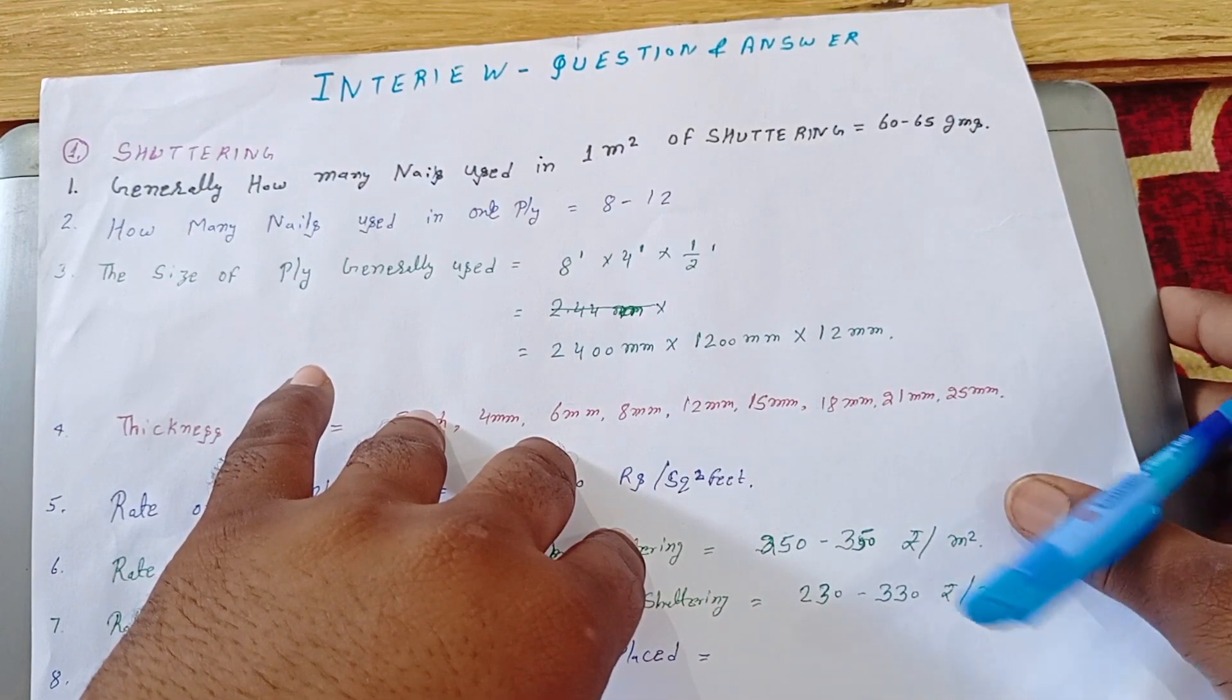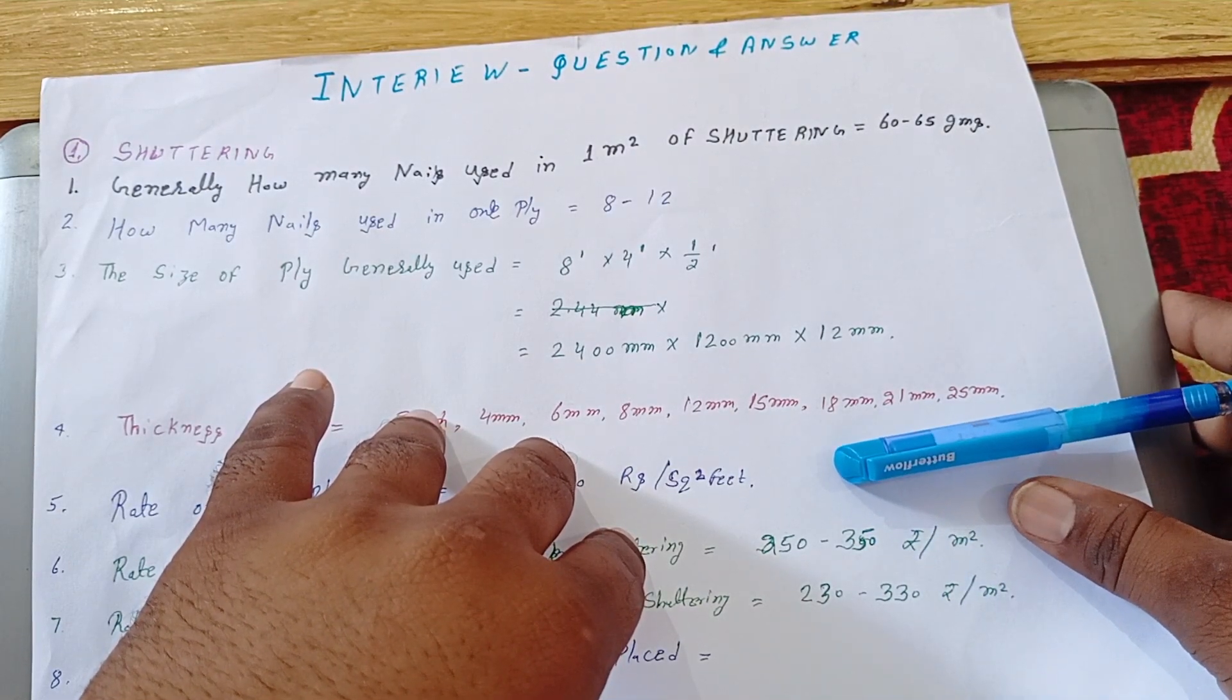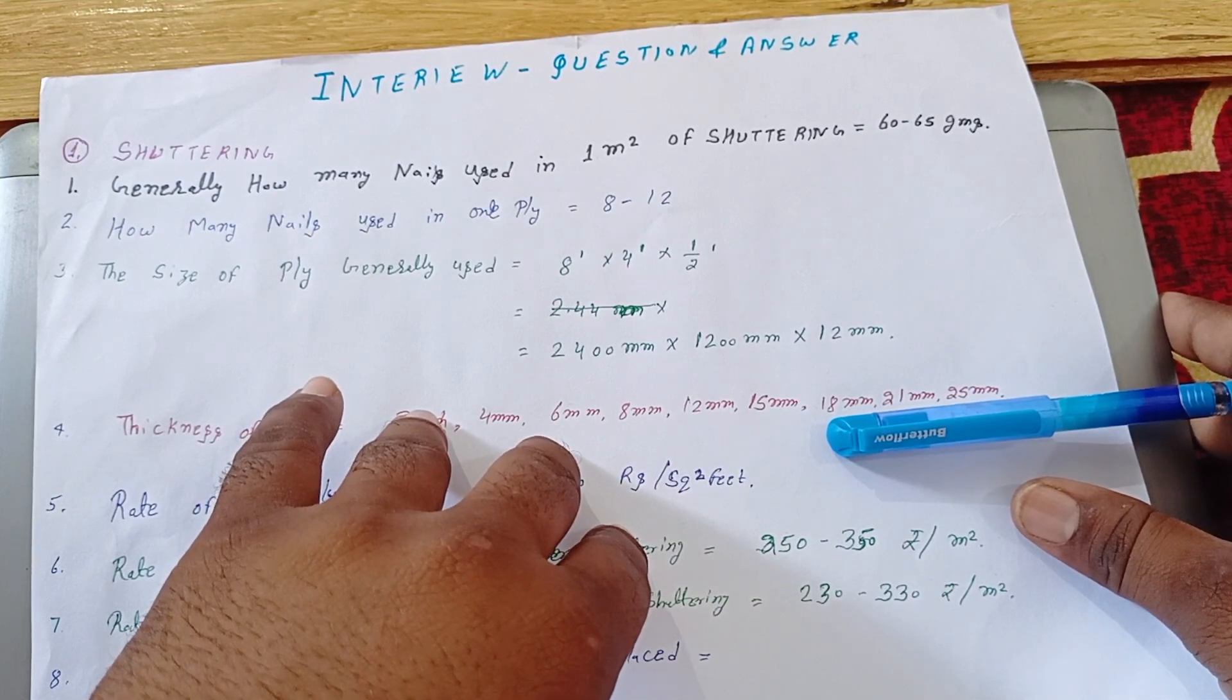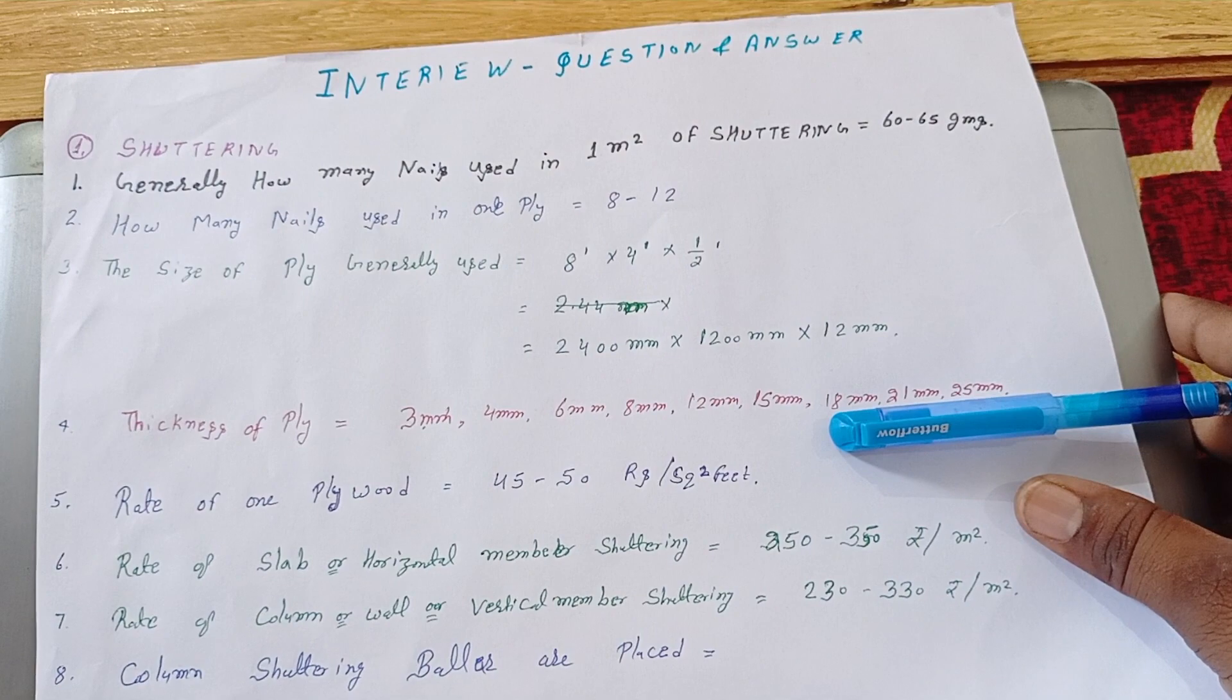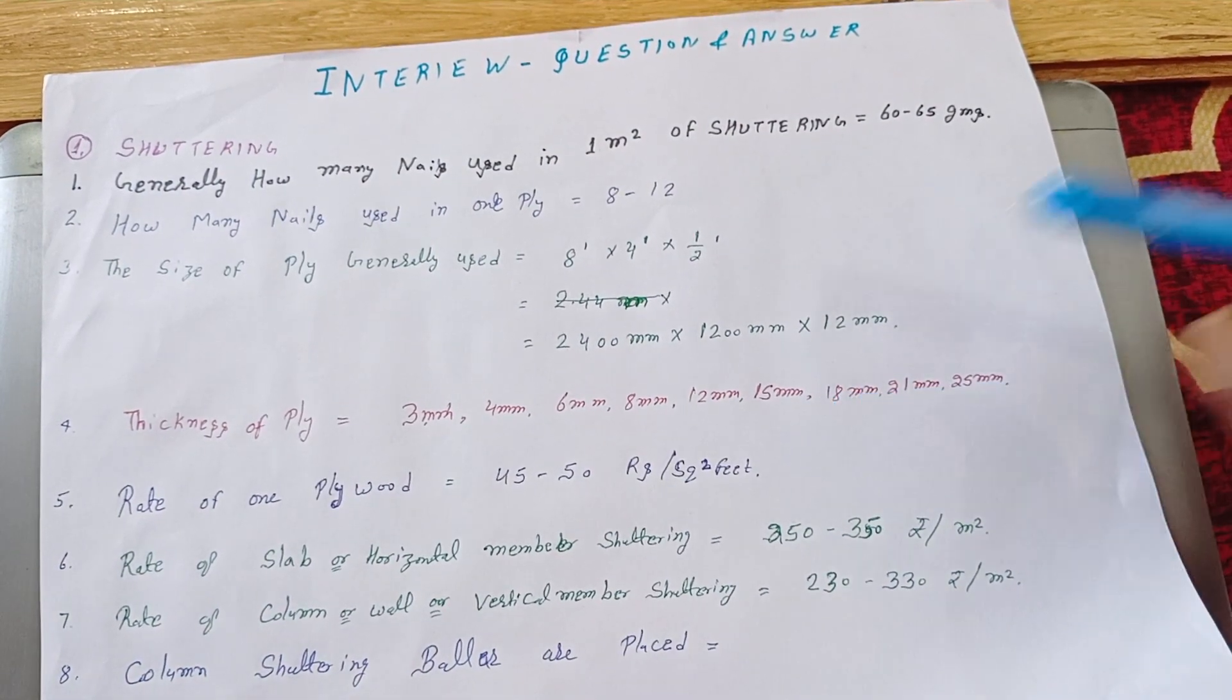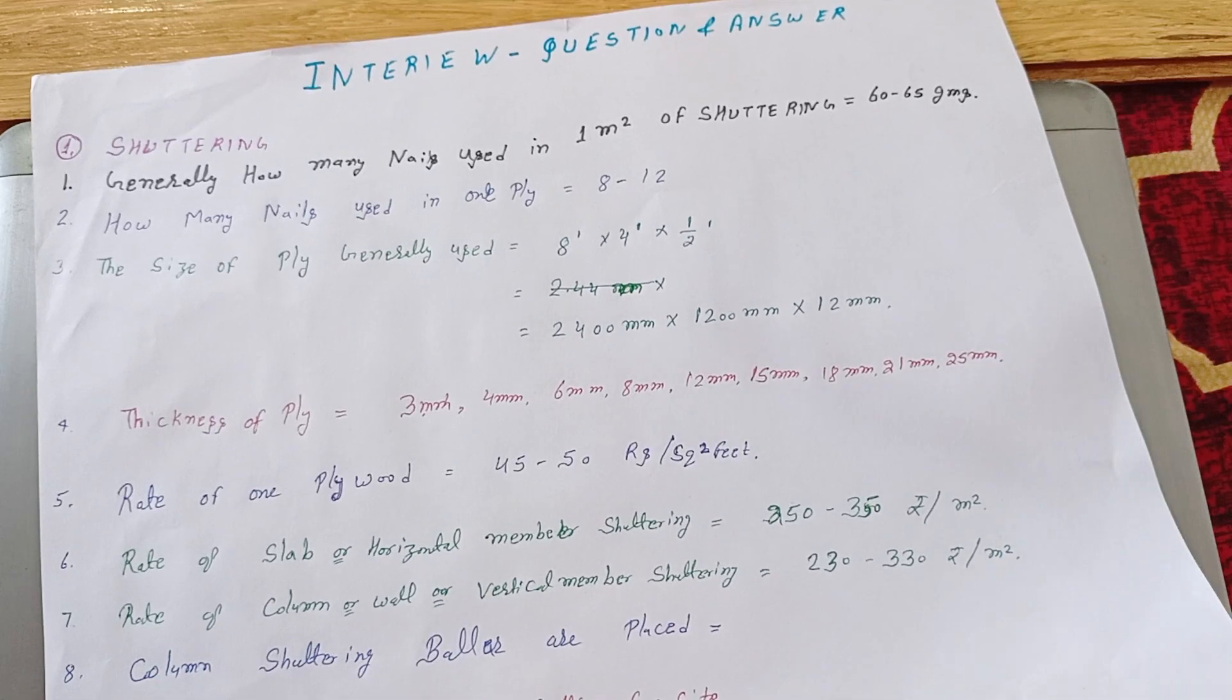Hello friends, today we will talk about an interview related question and answer about shuttering work. We have to do shuttering. Shuttering is called a type of formwork to mold, so we can cast concrete in desired shape.